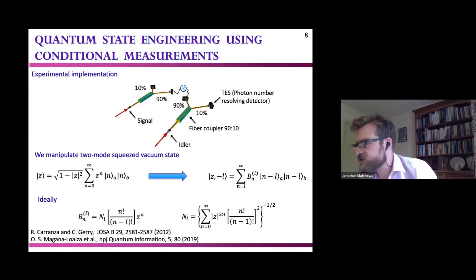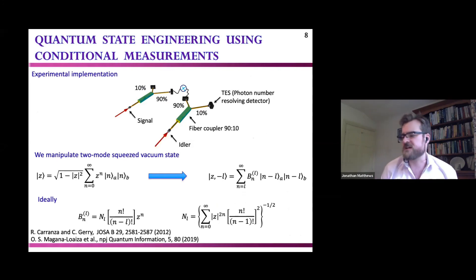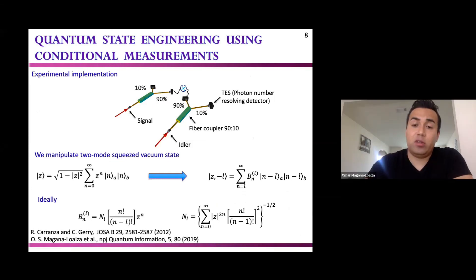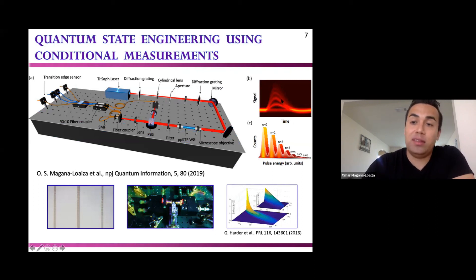Another question from Marian Crum: how do you extract more than one photon—just by adding more beam splitters? Omar explains: no, because they use photon-number-resolving detection. If they wait long enough, they get a signal with a specific amplitude corresponding to two-photon events, and that is how they identify the photon number.